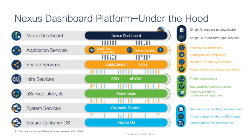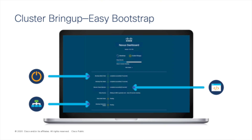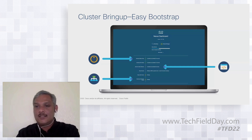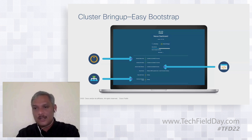Easy bootstrap is a recurring design theme throughout the Nexus Dashboard. Traditional cluster setup requires a bunch of CLI commands and figuring out reachability. With our bootstrap process, all you need to do is bring up one node through the UI, tell the first master node which are the two other peer nodes, and that's it — the cluster bring-up happens in the background automatically. It's a really easy bootstrap experience regardless of where your cluster nodes are actually sitting.